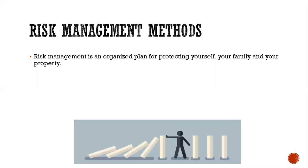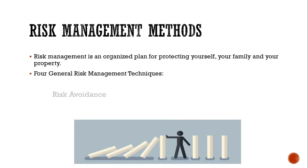So what do we do with all that risk? We know that risk exists, but it's all about how we manage the risk for ourselves, our family, and for our property. There are four different general risk management techniques. First, there's risk avoidance — avoiding risk could just be completely eliminating the possibility of that happening. If I don't hang glide, then I am completely avoiding the risk of being injured or killed in a hang gliding accident.